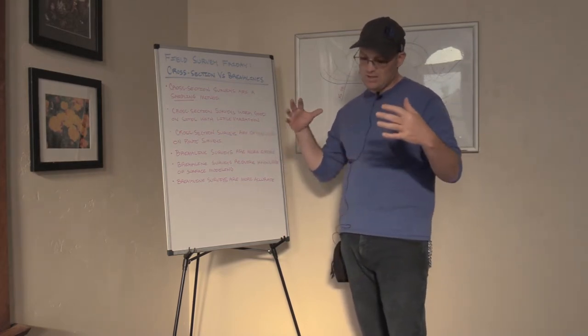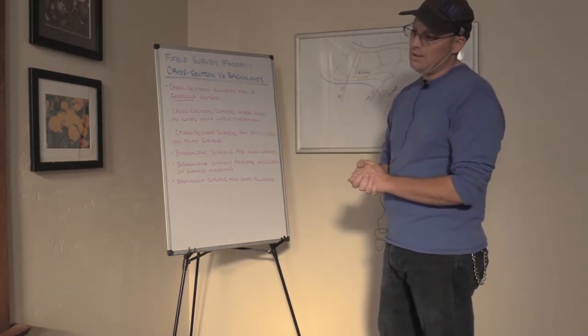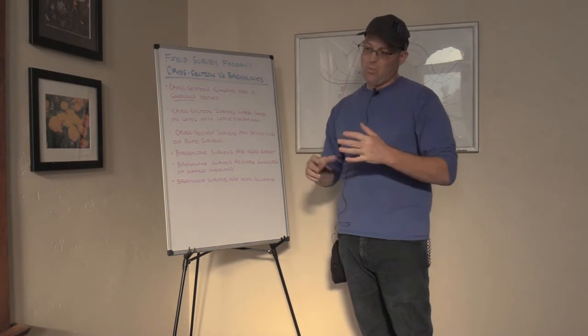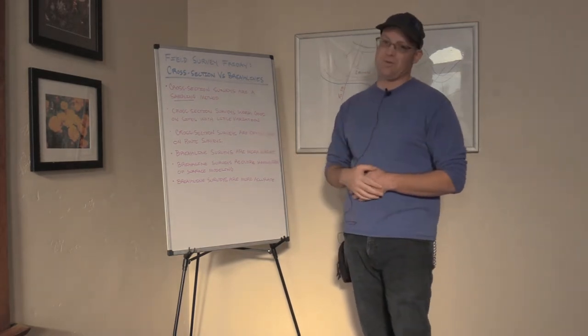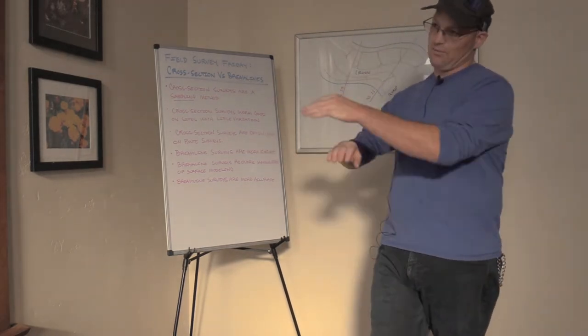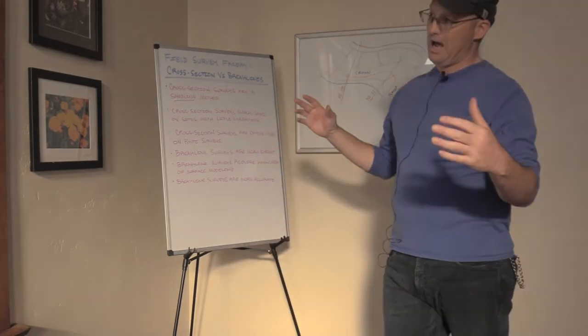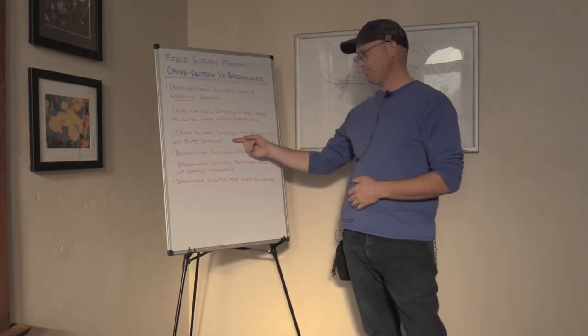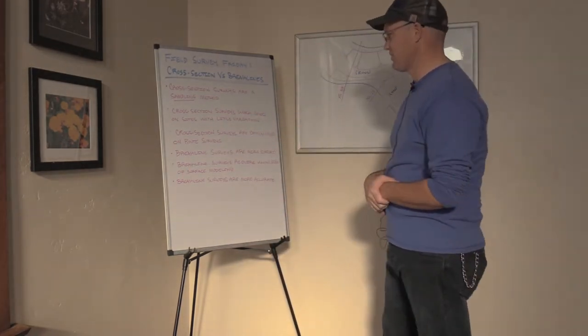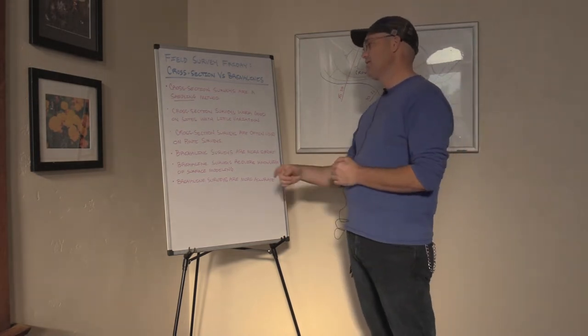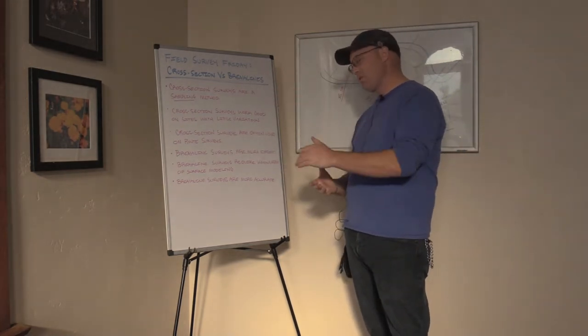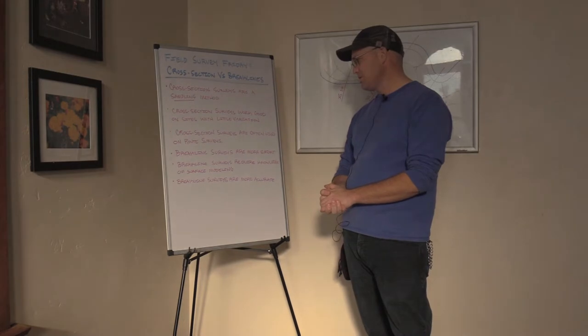Cross-section surveys, just because of the way they work, they're used most often on route surveys or corridor surveys. So if you have a long linear feature, like a road, a highway, a levee, a pipeline, sometimes you'll see people do cross-section surveys on those. Cross-section surveys lend themselves more to linear types of surveys.